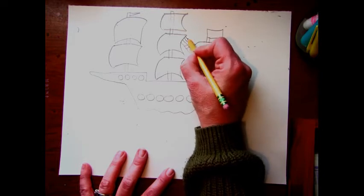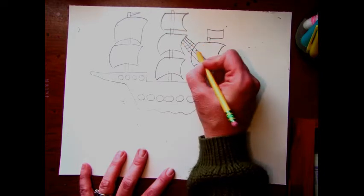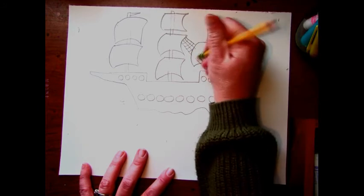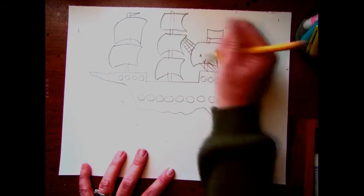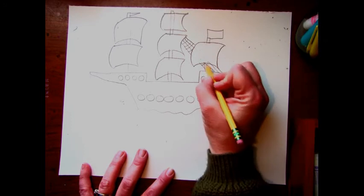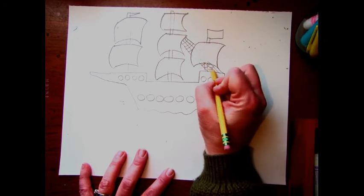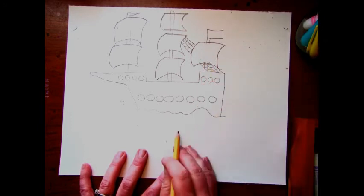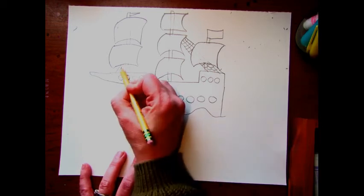but you can also draw them right on top of the sail and practice that erasing again so that it looks like they go behind the sail later on. I'll make some more of these ropes over here.